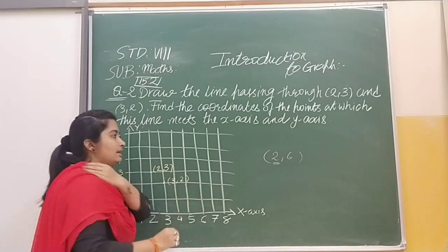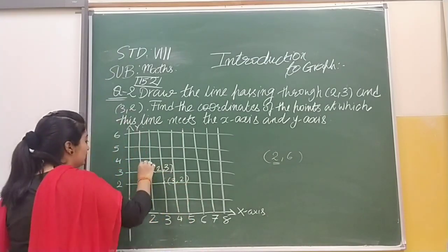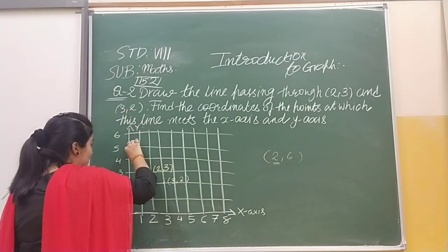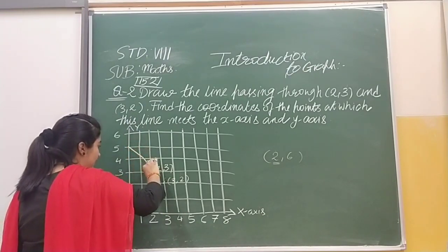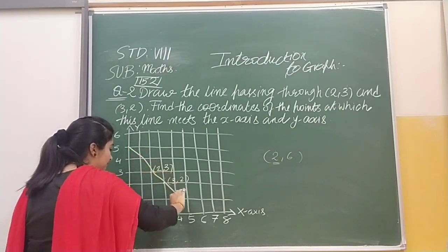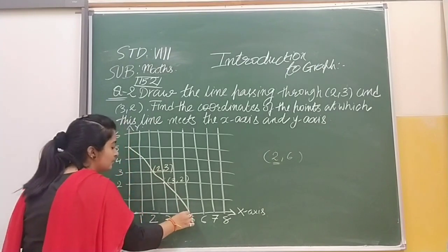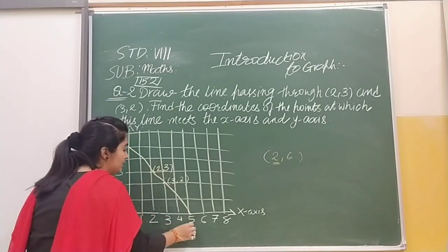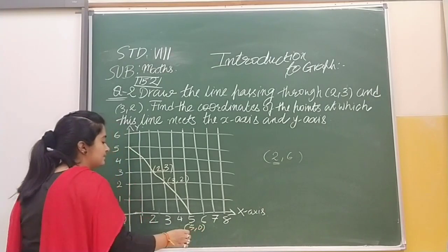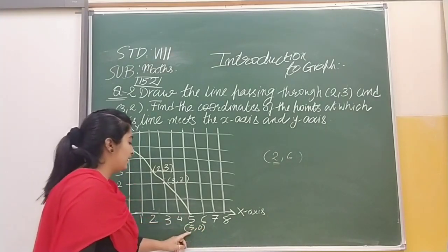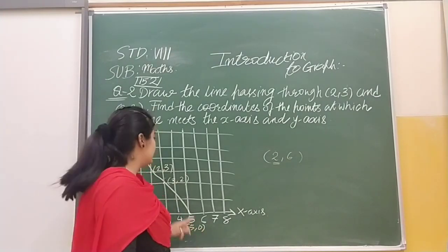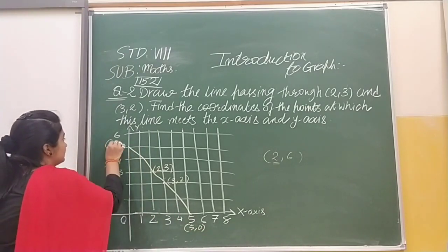Now we have to draw a line that is passing through it, and we have to tell where that line is meeting the x-axis and y-axis. So here our point will be (5,0). Here the x-axis is 5 and y-axis is 0.